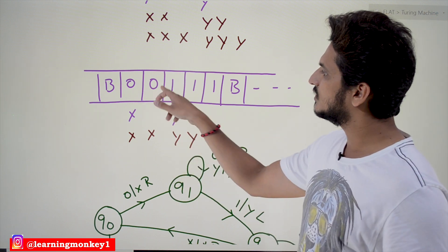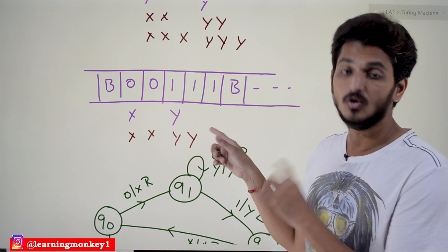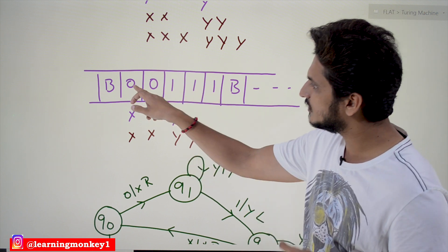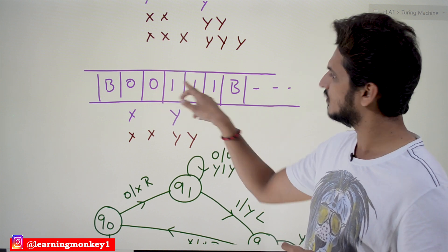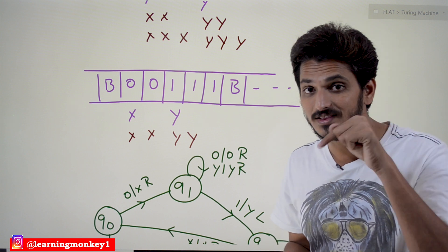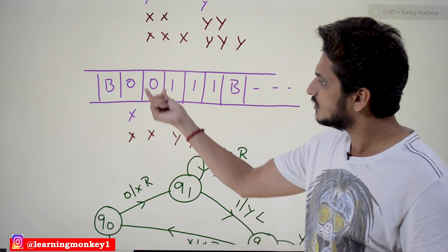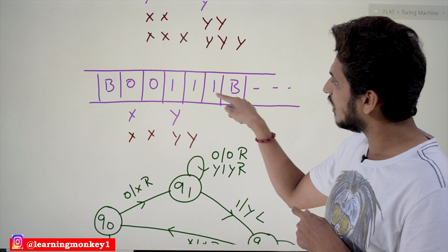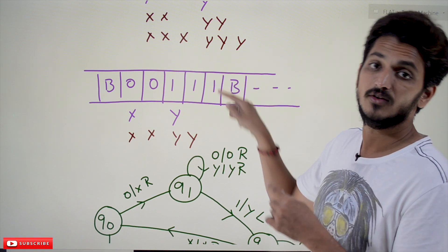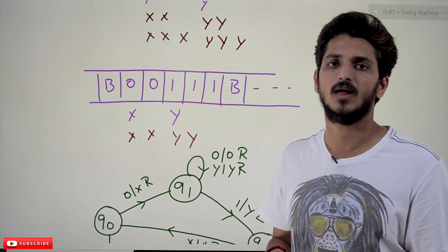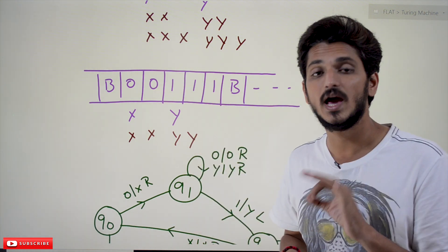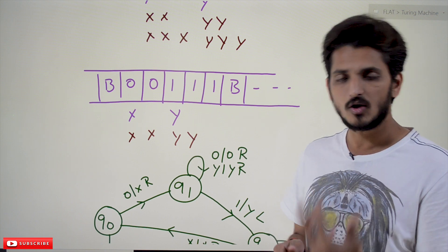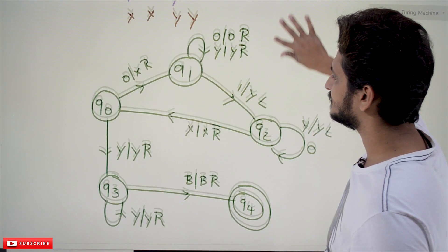Let's understand one more example: 0 0 1 1 1 — is it accepted? No. Two zeros followed by three ones should not be accepted. Whenever you find the first 0 an equivalent 1 is there; whenever you find the second 0 an equivalent 1 is there — but there is an extra 1. We have to check this condition also. After converting zeros to X and ones to Y, if extra ones remain, do not accept. Only if no extra ones remain do we accept. This condition also has to be written in our Turing machine.